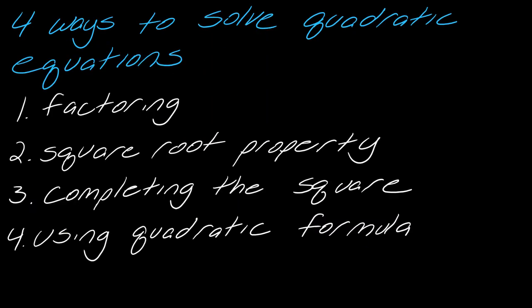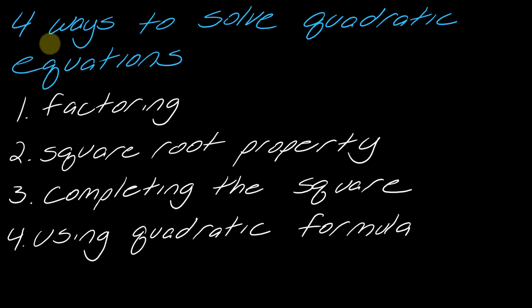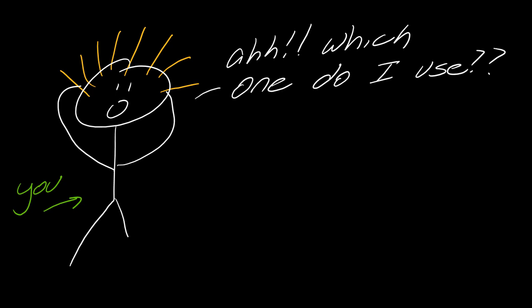There are four ways to solve a quadratic equation. You can factor, use the square root property, complete the square, or use the quadratic formula. If you forgot these, don't worry — this video will review how each one works, just like a little crash course reminder. If after watching this you feel you really forgot one of these techniques, I have a full lesson on each one. The natural question with the four techniques is: which one do I use? The answer is whichever is easiest for the problem — there's actually a best choice usually.